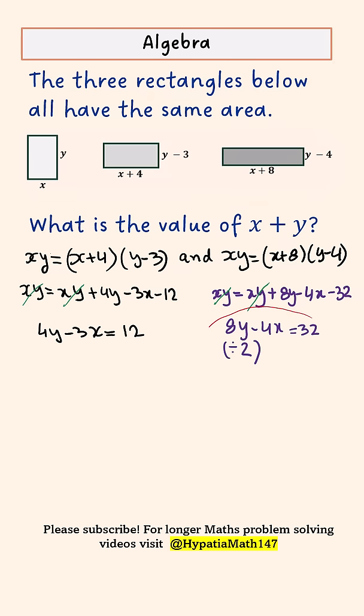So we divide this by 2, which gives us 4y minus 2x equals 16.